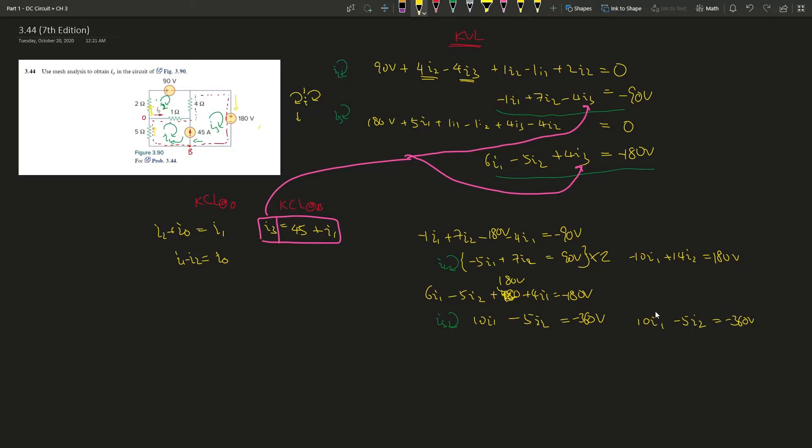So now we add these two equations together. Now you see negative 10, add 10, that's gone. And 14 minus 5, that's 9 I2. And this, you add them together, it's negative 180 V. So you divide it by 9 by both sides. I2 gives you negative 20 V.